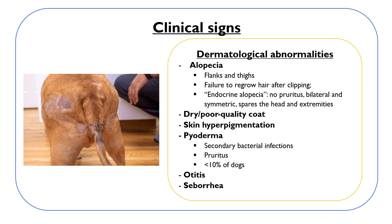Thyroid hormones play an important role in the maintenance of hair growth, so dermatological abnormalities appear in up to 80% of hypothyroid dogs. These include alopecia — usually in the flanks and thighs — and failure to regrow hair after clipping. This is an endocrine alopecia because dogs don't have pruritus; they don't scratch themselves. It is bilateral and symmetric and usually spares the head and extremities. Other signs include dry, poor quality coat with hair thinning and dry skin with scales, skin hyperpigmentation, pyoderma if there are secondary bacterial infections (in which case dogs do have pruritus, but this occurs in less than 10% of dogs), otitis and seborrhea.